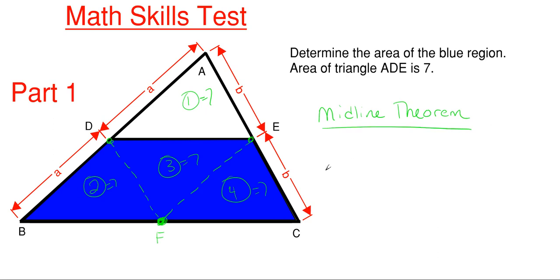This theorem comes from geometry. The blue shaded region is made up of triangles two, three, and four, so we have three triangles within the blue region.